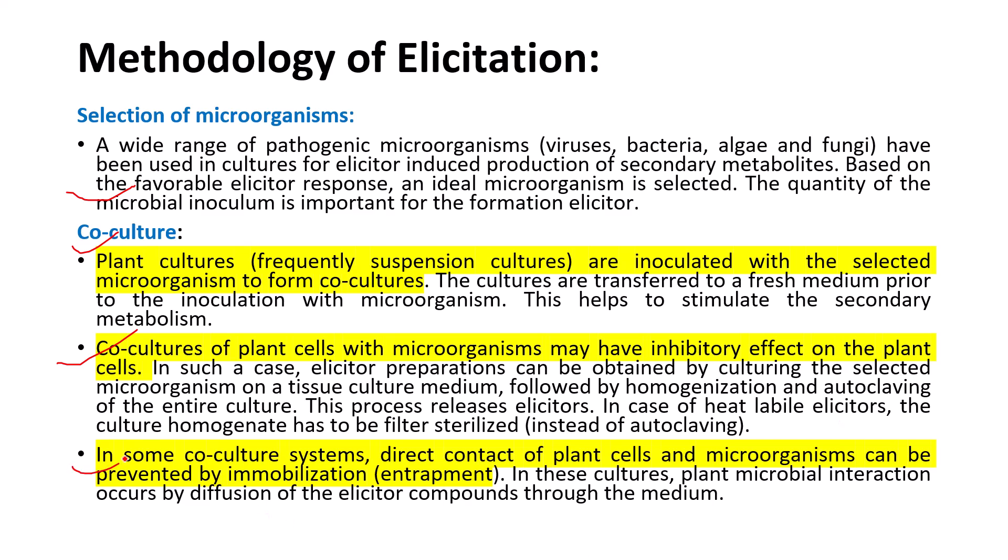Third, in some co-culture systems, direct contact between plant cells and microorganisms can be prevented by immobilization and entrapment of the microorganism or the elicitor compound derived from it. In these cultures, plant-microbial interaction occurs by diffusion of the elicitor compound through the medium.